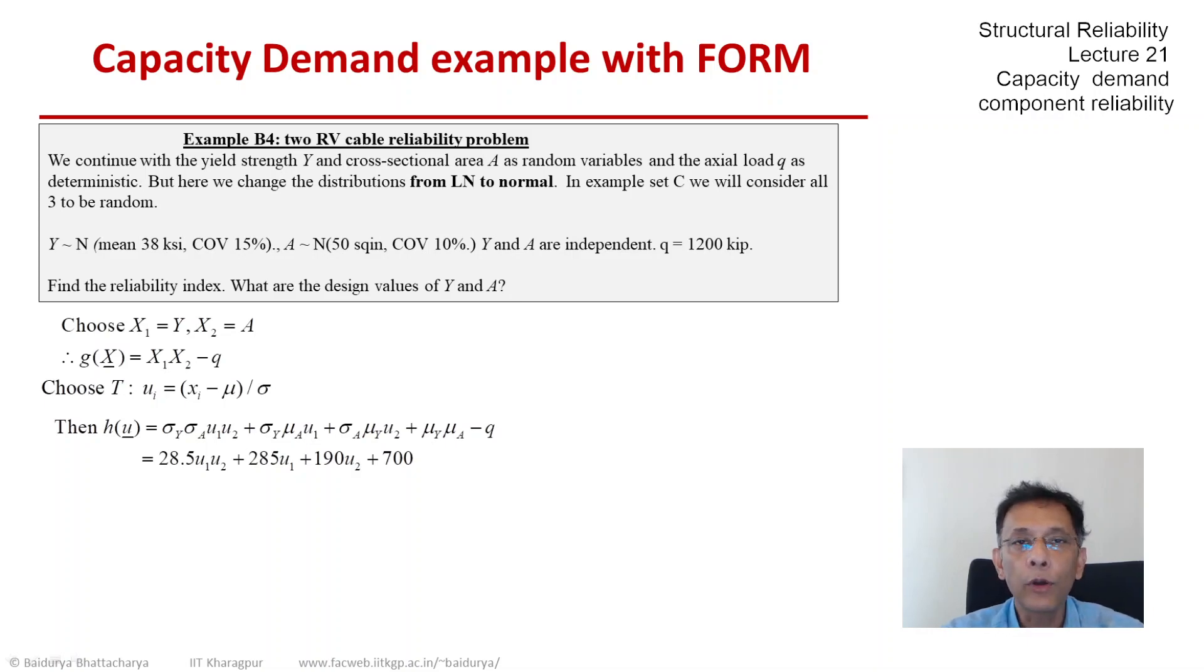There's one important difference here. We have not made any requirement that the failure probability or the reliability index be of a certain value. We have just presented the problem given the properties of Y and A, and here all we want is to find what the reliability index is. We just want to find it. And then whether we want to move mean of A around to achieve a particular beta, we will take up later. But for now, let us just see how we can solve this non-linear limit state problem.